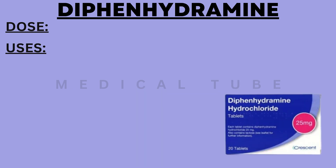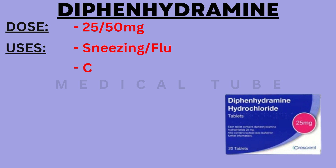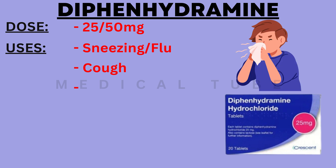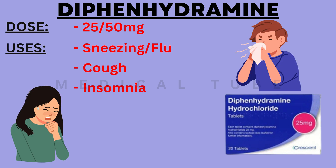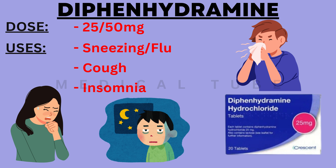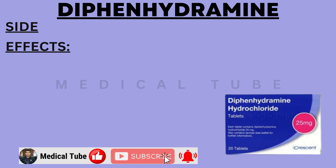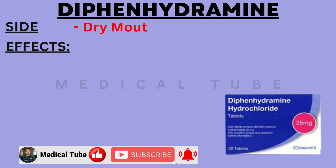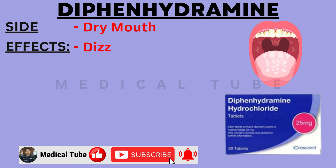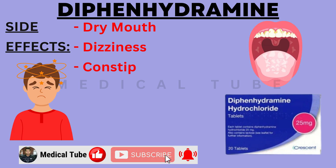The next drug is Diphenhydramine. The dose for Diphenhydramine is 25 mg or 50 mg. It is used in sneezing or flu, cough and insomnia, i.e. lack of sleep. The side effects of Diphenhydramine are dry mouth, dizziness and constipation.